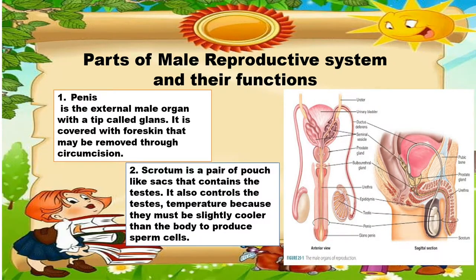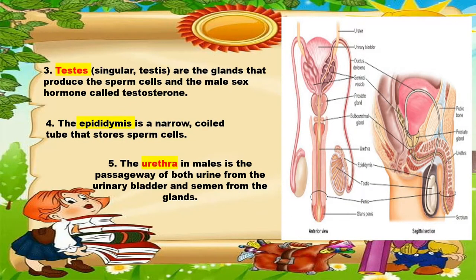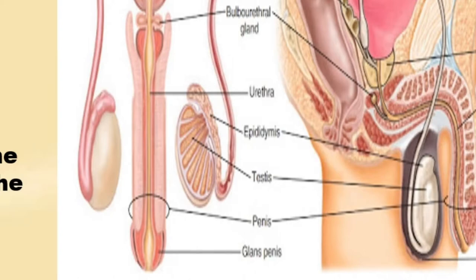The third one is the testes. These are the glands that produce the sperm cells and the male hormones called testosterone.